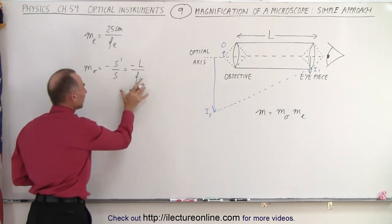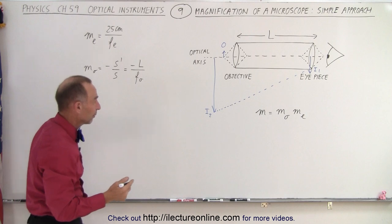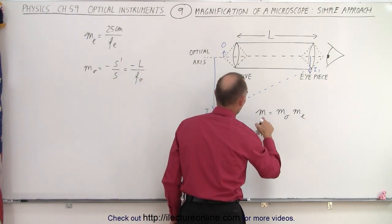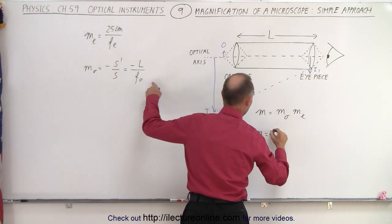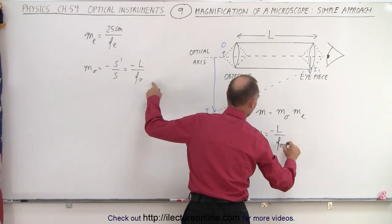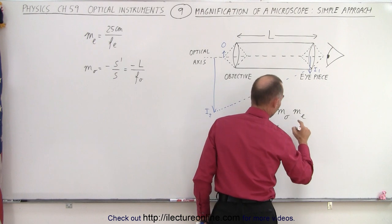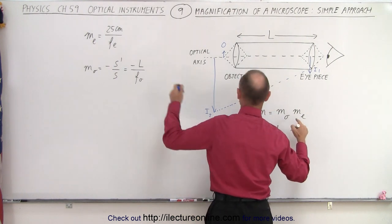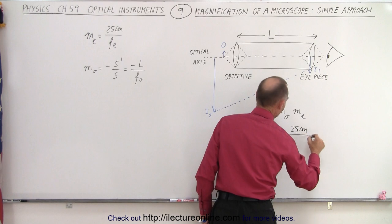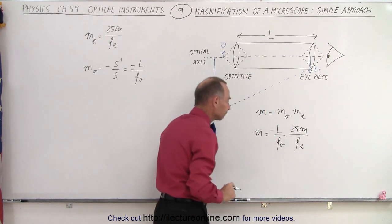So in the simplistic view of the magnification of the objective, the total magnification of the microscope is going to be minus the length of the microscope divided by the focal length of the objective, times the magnification of the eyepiece for relaxed viewing, which is 25 centimeters divided by the focal length of the eyepiece.